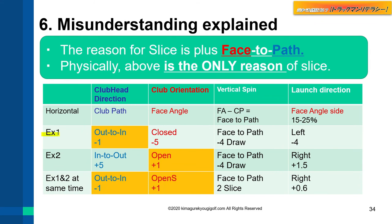A golfer swings out to in — club path is minus one — and he draws the ball. How could this happen? Because his club face is closed. Example 2: at impact, the club face is open one degree, and still the ball curves to the left — a draw.